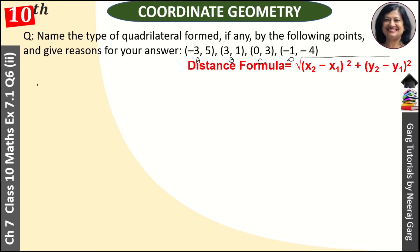So first we will find AB. AB is equal to under root of (3 minus -3) whole square plus (1 minus 5) whole square. So it is 3 plus 3, that's 6, 6 square plus (-4) square. And this becomes 36 plus 16 under root, or this is root 52.